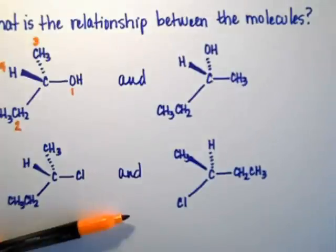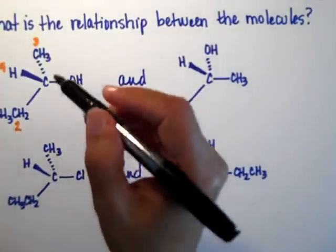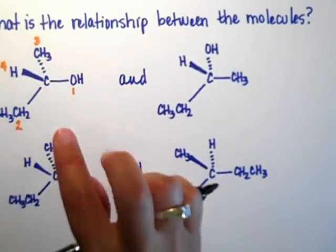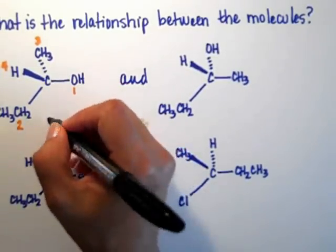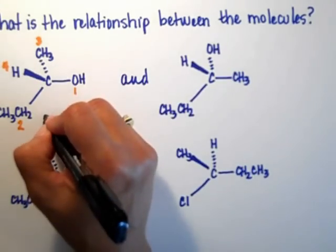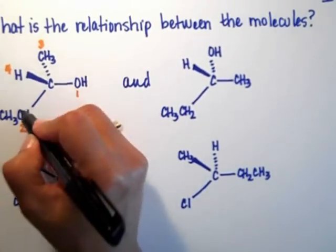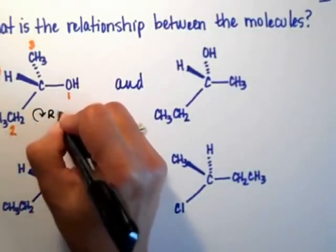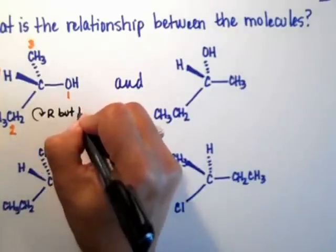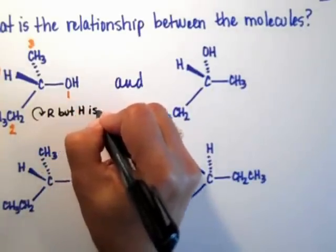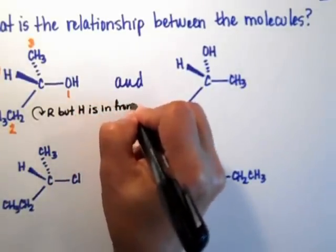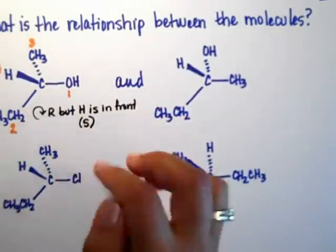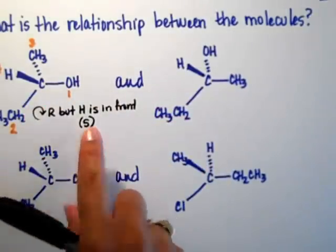Whenever the hydrogen is on the wedge, remember that we can actually assign stereochemistry without rotating the molecule. We just have to do the opposite trick, or I like to call it the opposite trick. One, two, three. You see my pen is going R, but the hydrogen is in the front. So it's the opposite of R.